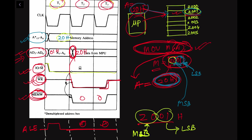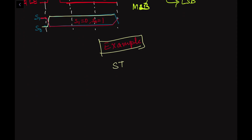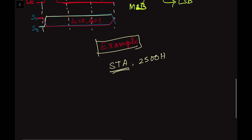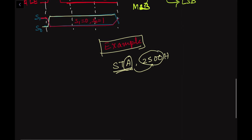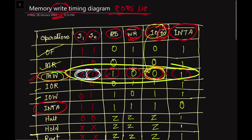Another example of a memory write instruction is STA (Store Accumulator): STA 2500H stores the content of the accumulator into memory address 2500H. Whatever data is in the accumulator register will be stored into that memory address. This is the memory write operation. Thank you for watching — if you have any questions please put them in the comment section below, and like, share, and subscribe.